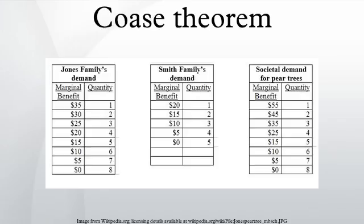In Law and Economics, the Coase Theorem describes the economic efficiency of an economic allocation or outcome in the presence of externalities. The theorem states that if trade in an externality is possible and there are sufficiently low transaction costs, bargaining will lead to an efficient outcome regardless of the initial allocation of property.